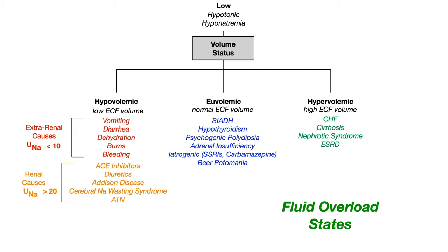At varying other severities of kidney disease it could fall into hypovolemic or euvolemic categories, but you don't need to know that nuance for board exams. The takeaway is that hypervolemic states are fluid-overloaded causes: CHF, cirrhosis, nephrotic syndrome, and end-stage renal disease. If you understand everything covered in this video, you understand hyponatremia.